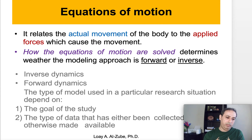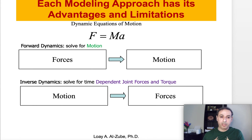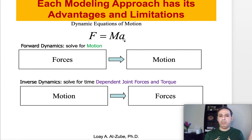Each modeling approach has its advantages and limitations. To formulate the equations of motion, we rely on Newton's second law: force equals mass times acceleration. If you are in a lab and you are given the forces and asked to find the motion, this is called forward dynamics. If someone gives us the forces that produce the movement of the human body, dividing the force by the mass gives you acceleration. You can integrate once to get velocity and integrate twice to get position — that's your motion. So we started with forces and ended up with motion: this is forward dynamics.